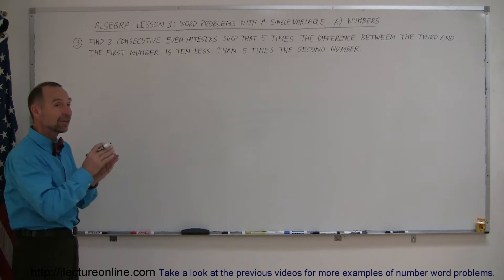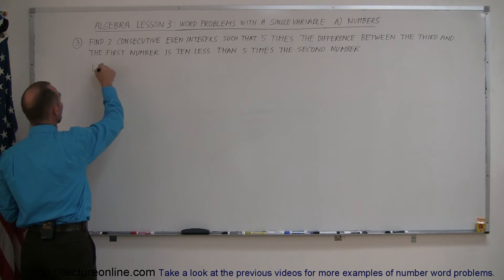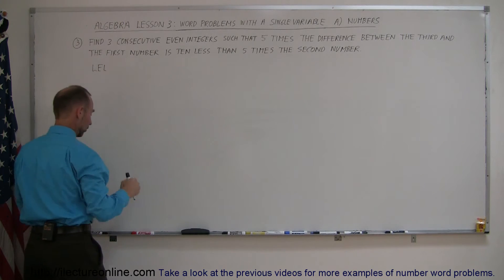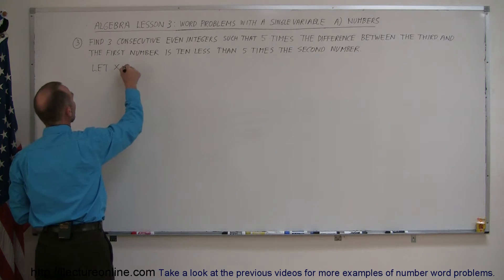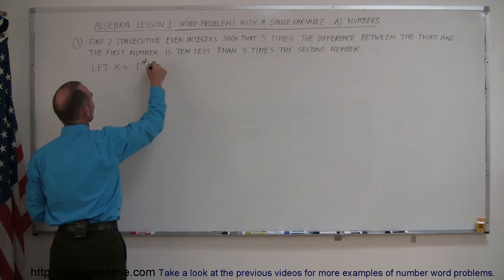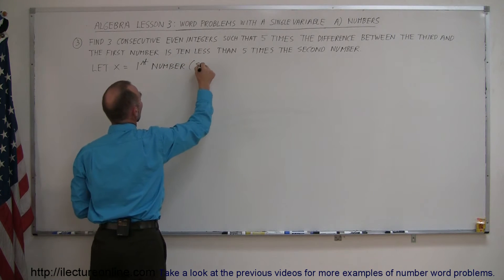They're consecutive even integers. That means each number is two more than the previous number. So, we're going to let x be the first or the smallest. So let x equal the first number, which is the smallest number.